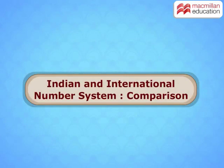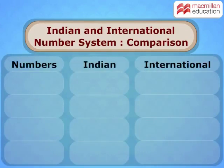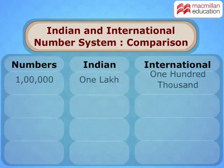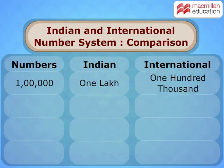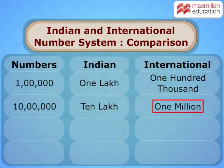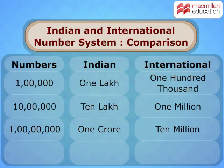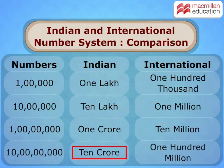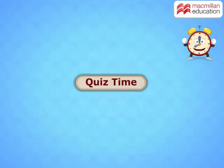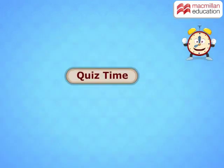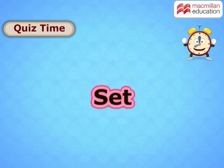You can easily compare the international and Indian number systems using this chart. Remember: 1 lakh is 100,000; 10 lakh is 1 million; 1 crore is equal to 10 million; and 10 crore is 100 million. Let's have a rapid-fire round of questions — ready, set, go!